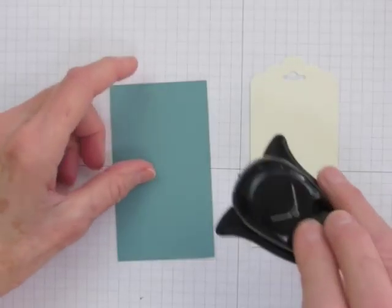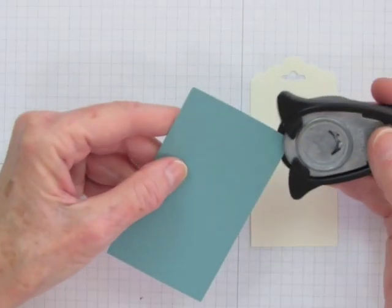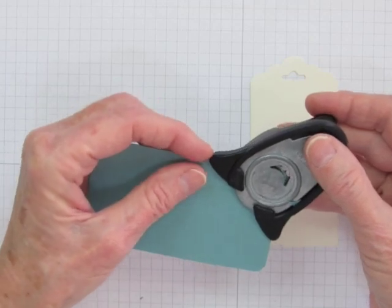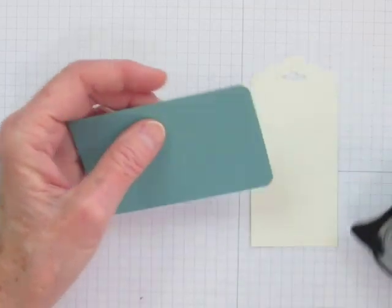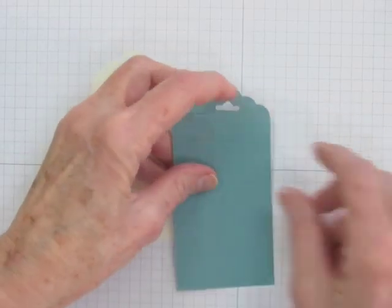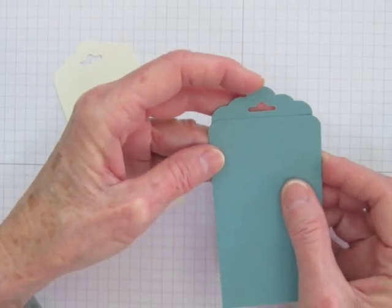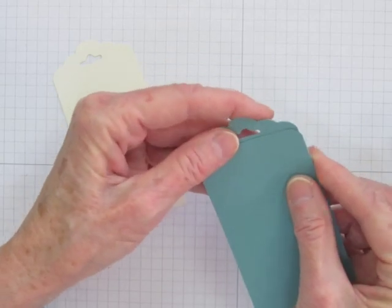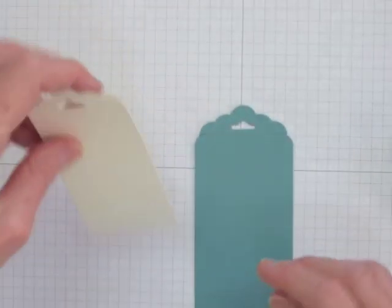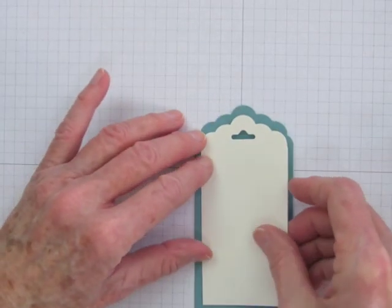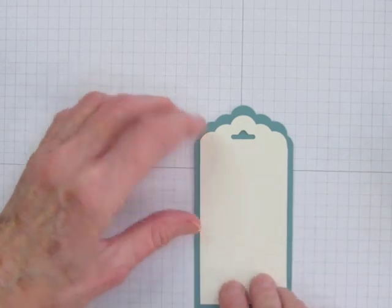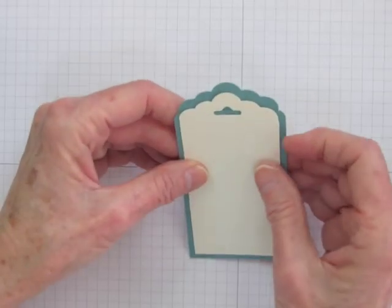The next thing I'll do is take a corner punch and round two of the corners like so. Then I'll use some temporary adhesive and put the smaller mat behind the larger one.